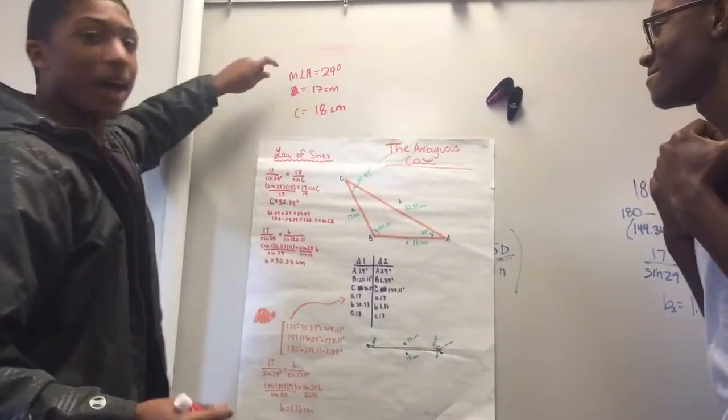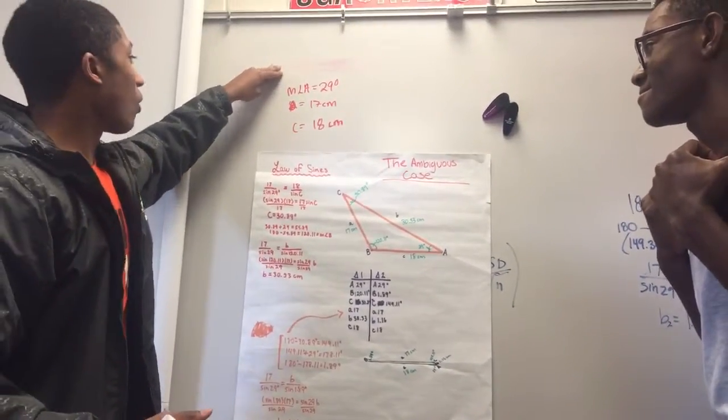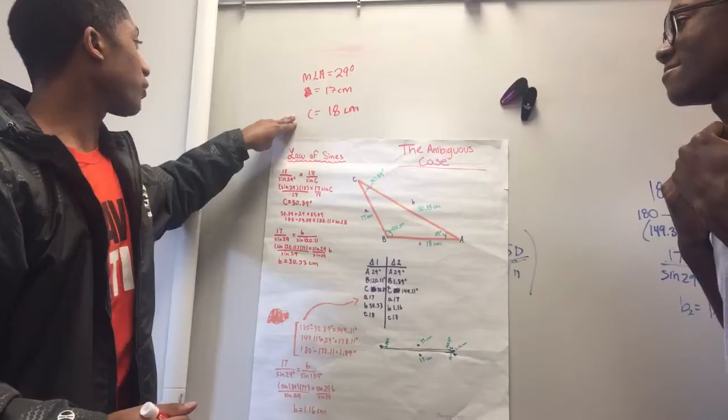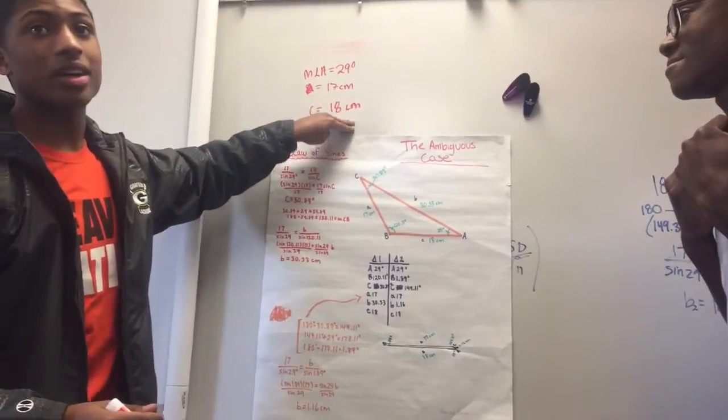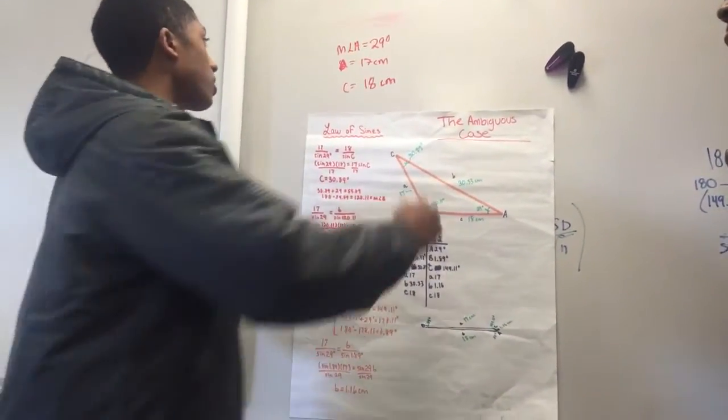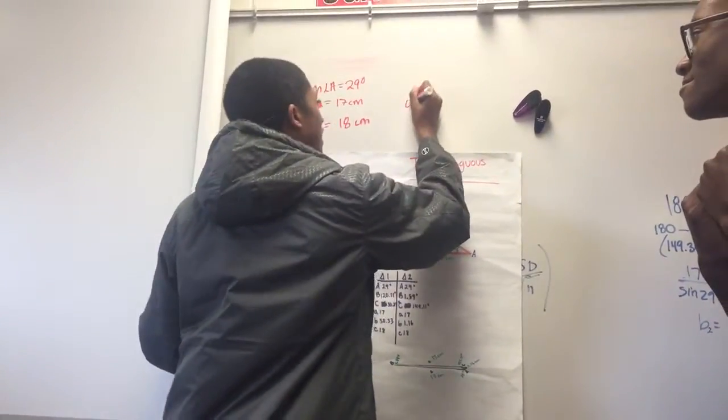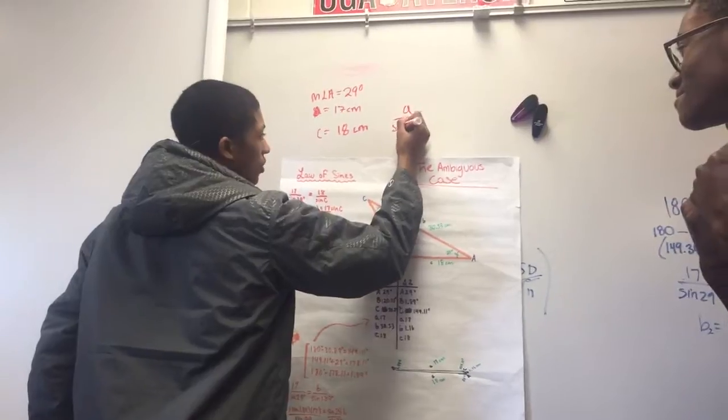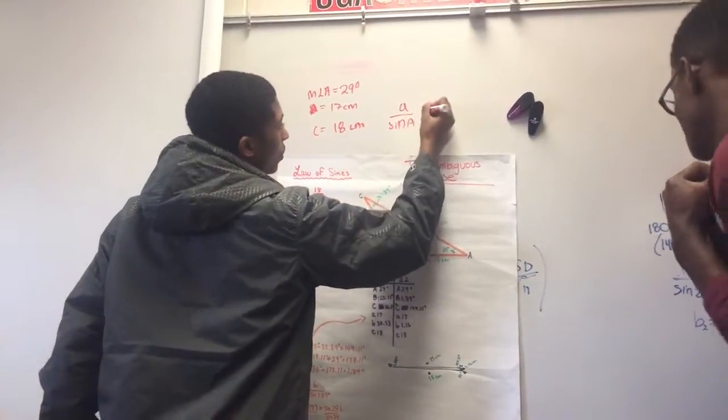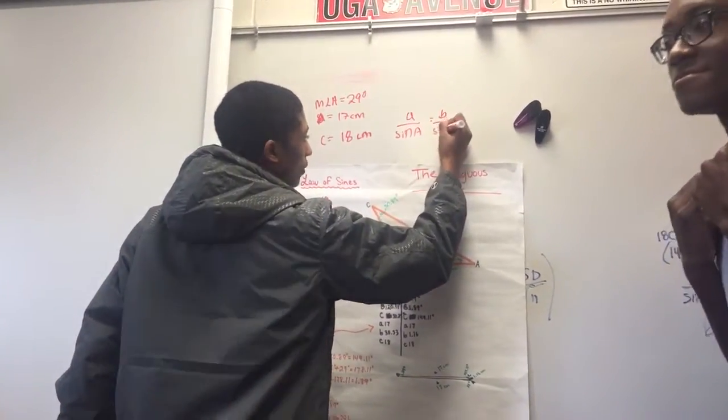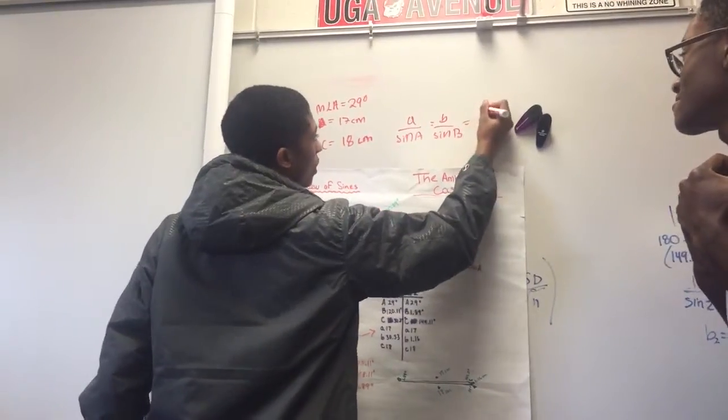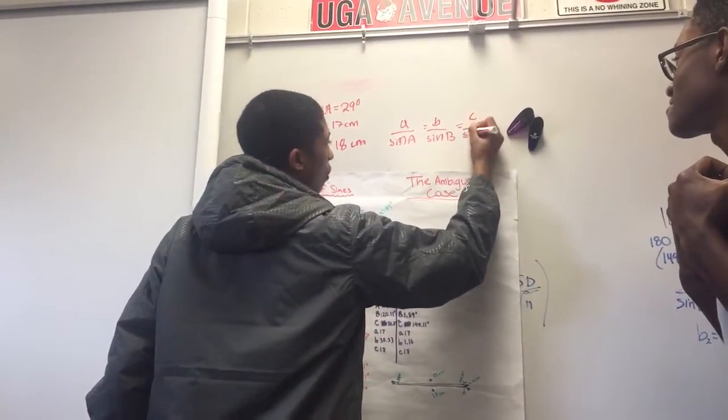So now, using the law of sines, we can solve this triangle to find angle C and everything else. Mr. Matt, what is the law of sines? So now, the law of sines is side A over sine of A is equal to side B over sine of B, which is equal to side C over sine of C.